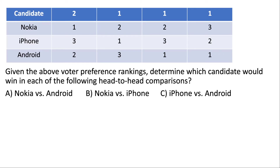So let's look at an example. We're given this voter preference ranking and we want to determine which candidate would win in each of the following head-to-head comparisons. First, let's see how many votes there are in total so we can check our work later. If we add up the total number of votes, we end up seeing that there are five votes total. Sometimes the problem tells us this; here we had to figure it out. We'll use it to check our work.